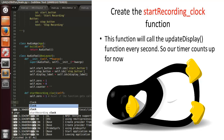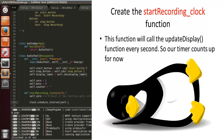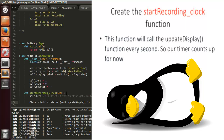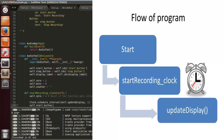This is how we define the clock schedule: Clock.schedule_interval, and we run the update_display function — which we haven't defined yet but will — every second. So pressing the start button calls start_recording_clock, which calls update_display every second.